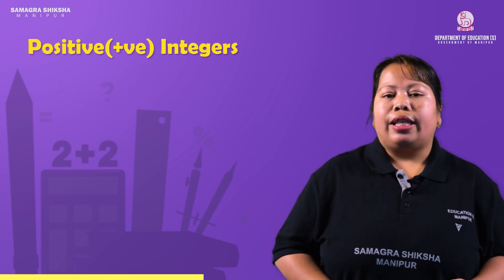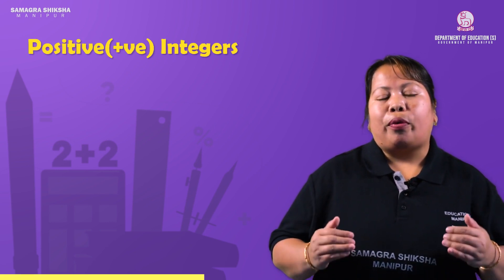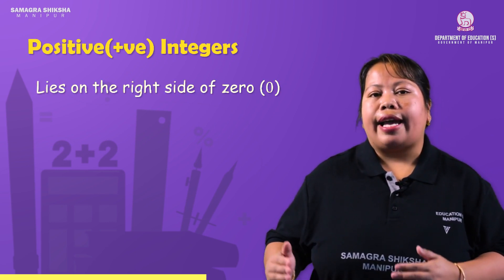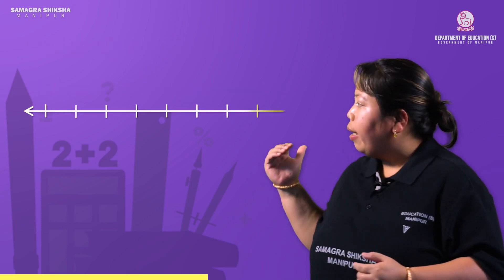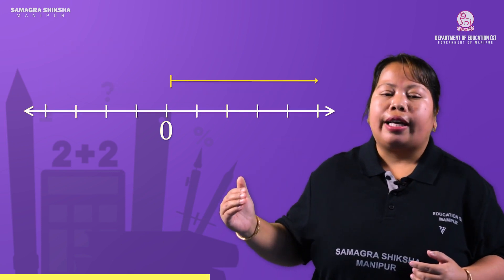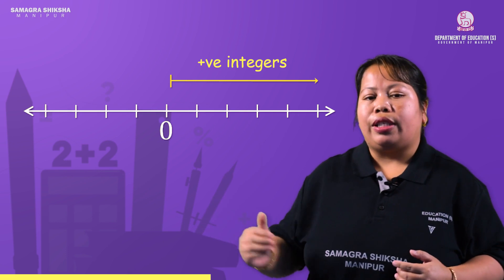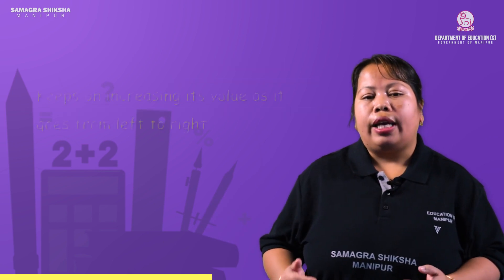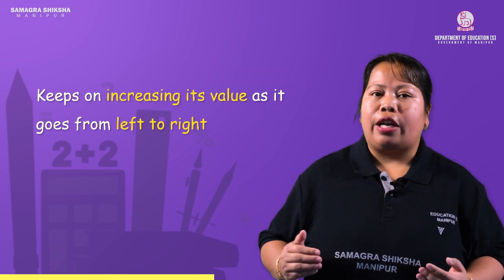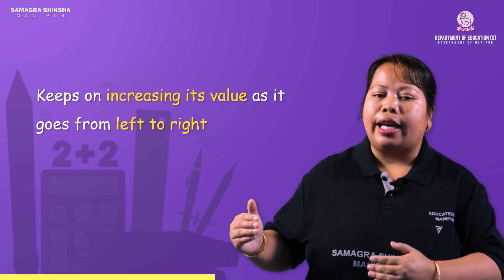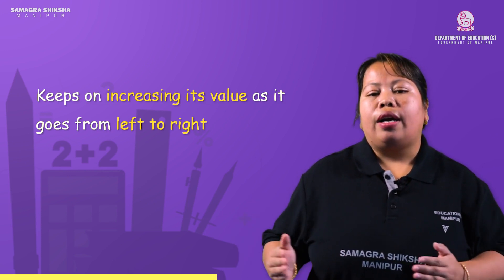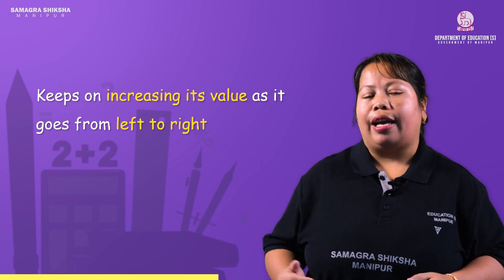The positive integers lie on the right side of 0, and their value keeps on increasing as we go from left to right on the number line.